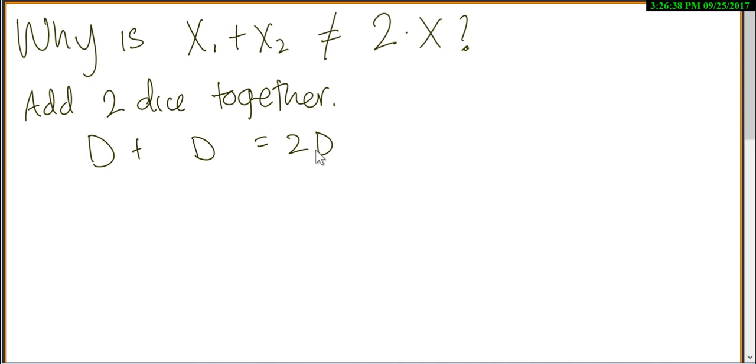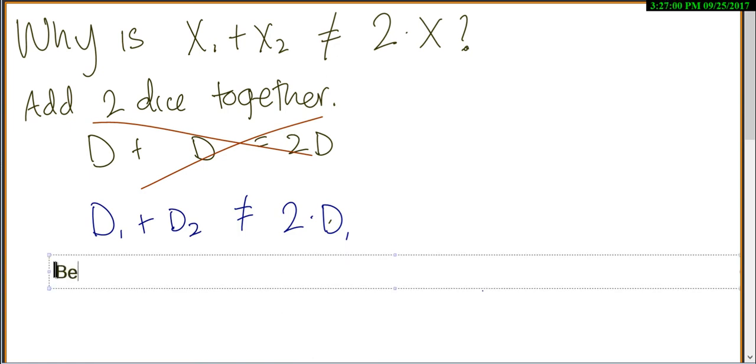Or adding two together is the same thing as times by 2. But it's not quite that simple. You can't actually do that. The reason why is it's much more accurate to say it's D1 plus D2. And that's not going to be the same as 2 times just your first dice, because you get different results on each dice. And because you're getting different results, you can't just say 2 times the first result. You actually have to add two different results together.